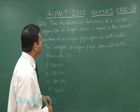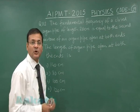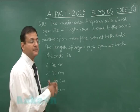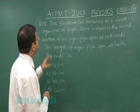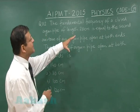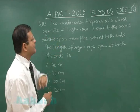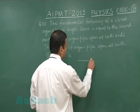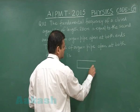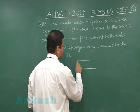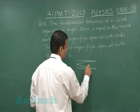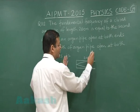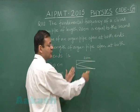Question 112 is based on organ pipes and various modes of vibration. It says that the fundamental frequency of a closed organ pipe of length 20 centimeters. For a fundamental vibration of a closed pipe, lambda by 4 has been given as 20 centimeters.